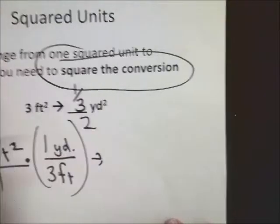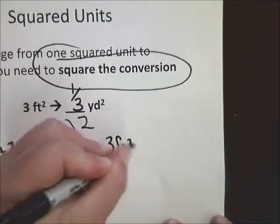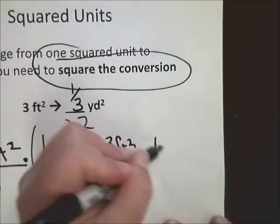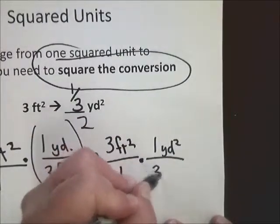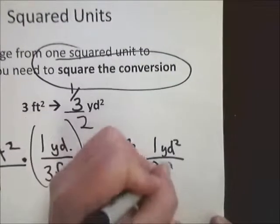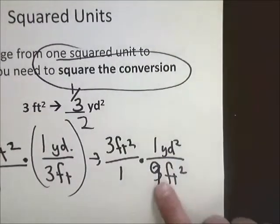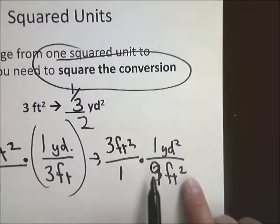What that changes it into is 3 feet squared over 1 times 1 yard squared over 9 feet squared. Make sure you square the number, and then just add the square onto the unit.